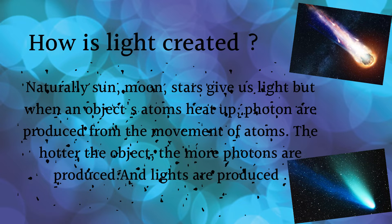How is light created? Naturally, the sun, moon, and stars give us light. But when an object's atoms heat up, photons are produced from the movement of atoms. The hotter the object, the more photons are produced and light is created.